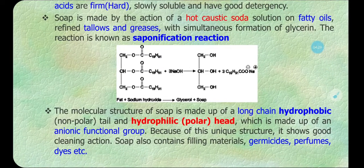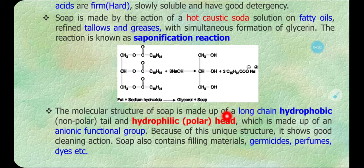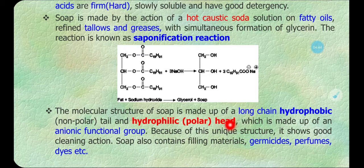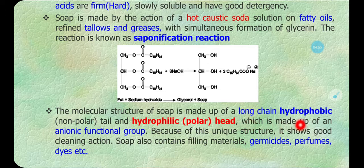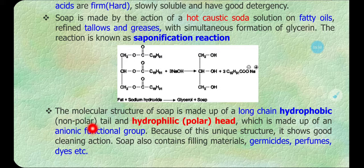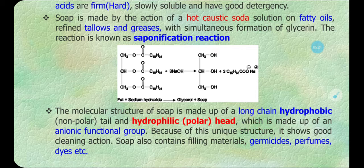The molecular structure of soap is made up of a long-chain alkyl hydrophobic group, also called the non-polar tail, and a hydrophilic polar head — a functional group — which gives it polarity and affinity to water. Because of this unique structure, soap shows good adsorption activity and micelle formation, which gives it its cleaning action. Soap also contains several additives such as germicides, perfumes, and dyes to produce a variety of soaps.